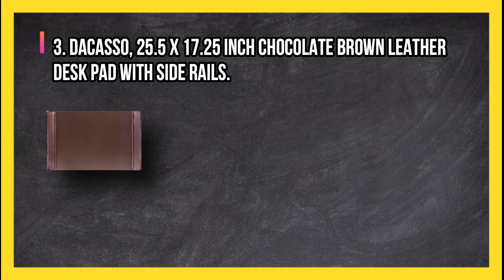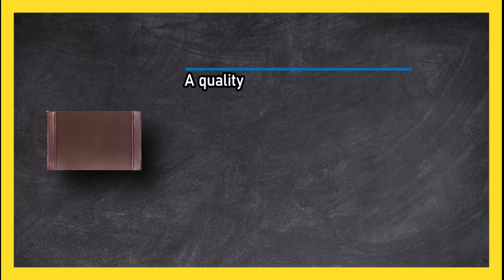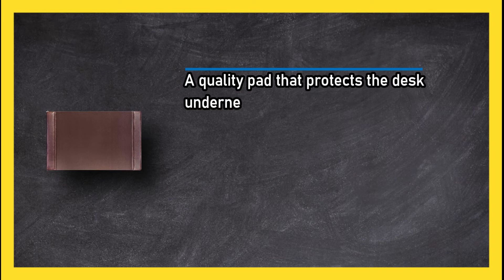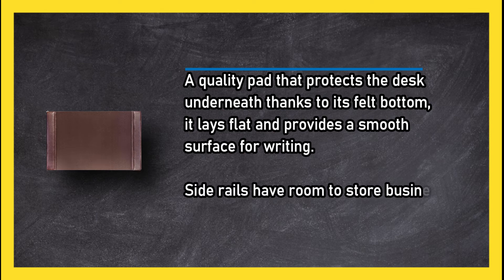At number three, Dacasso 25.5 by 17.25 inch chocolate brown leather desk pad with side rails. A quality pad that protects the desk underneath thanks to its felt bottom. It lays flat and provides a smooth surface for writing. Side rails have room to store business cards.